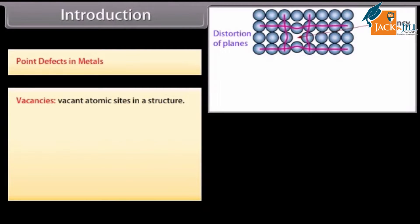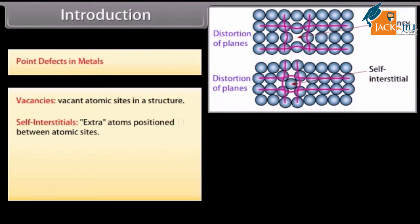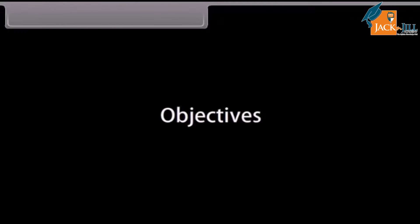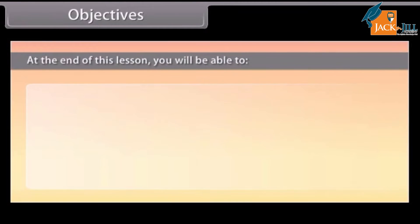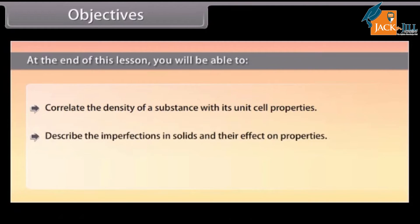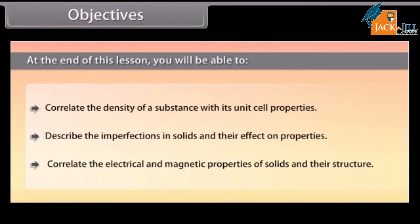Introduction: Point defects in metals. Vacancies are vacant atomic sites in a structure. Self-interstitials are extra atoms positioned between atomic sites in metals. A self-interstitial introduces relatively large distortions and strain in the surrounding lattice since the atom is substantially larger than the interstitial site. Objectives: At the end of this lesson, you will be able to correlate the density of a substance with its unit cell properties, describe the imperfections in solids and their effect on properties, correlate the electrical and magnetic properties of solids and their structure, and perform calculations involving unit cell dimensions.